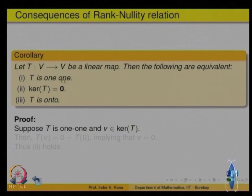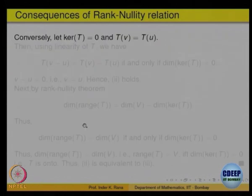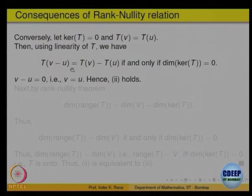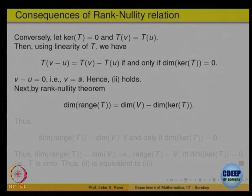Let us say T is one-to-one, meaning different elements go to different elements. If a vector v belongs to the kernel of T, then T(v) = 0, which is the same as T(0). By the one-to-one property, that implies v must be zero. So (1) implies (2). Conversely, if the kernel is zero and T(u) = T(v), then by linearity T(u − v) = 0, meaning u − v belongs to the kernel. Since the kernel is only zero, v − u must be zero, so v equals u. Thus (1) is equivalent to (2).